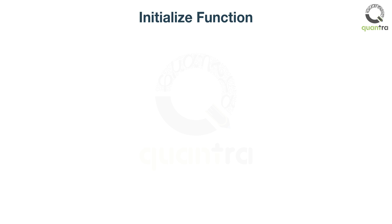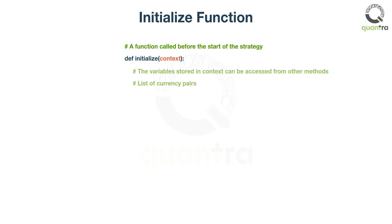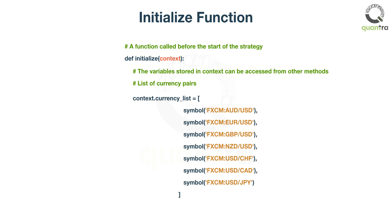The first step to create a strategy is to define the Initialize function. This function is called once before the start of the strategy. It is passed in a context variable which is a persistent namespace to store variables. In the Initialize function, we define a list of currency pairs that we are interested to trade in and store the list in context.currency_list.